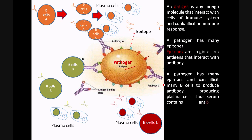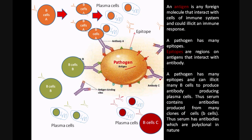A pathogen has many epitopes and can elicit many B cells to produce antibody-producing plasma cells. Thus, serum contains antibodies produced from many clonal lines of plasma cells, and the serum therefore has antibodies which are polyclonal in nature.